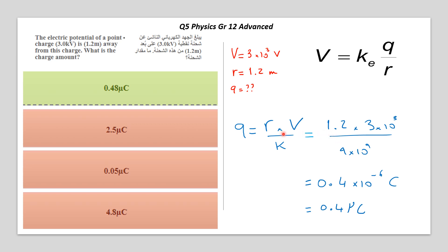You replace the numbers: r is 1.2 multiplied by 3 kilovolts, 3 by 10 to the power of 3, divided by K. K is given in the formula sheet at the beginning; it's 9 by 10 to the power of 9.